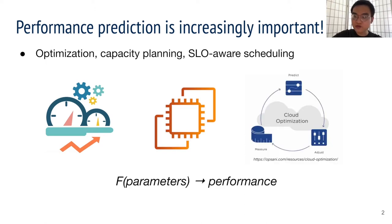Performance prediction, simply put, is to discover the mapping between system parameters and performance. These parameters can be things like number of workers and input sizes, and the performance can be, for example, job completion time.